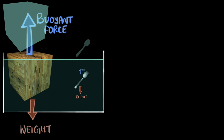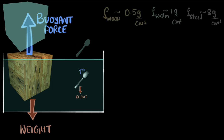But why is the weight of this displaced water bigger than that of the box, while the weight of this displaced water is less than that of the spoon? For that, we need to look at density.